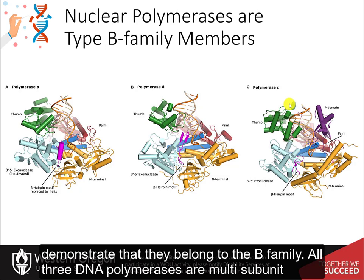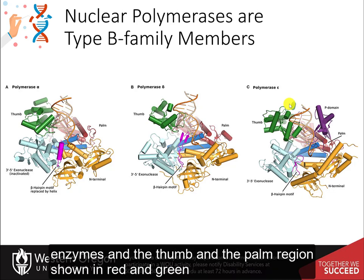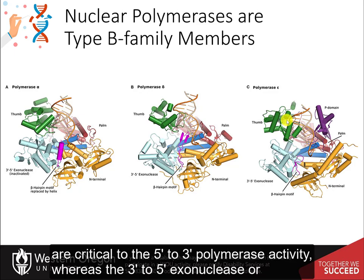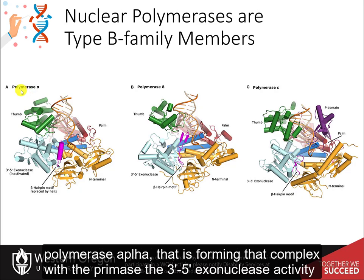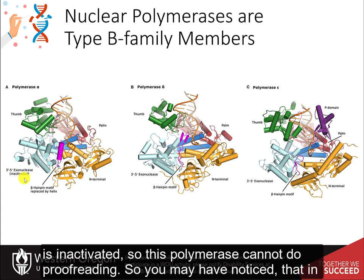All three DNA polymerases are multi-subunit enzymes. The thumb and palm regions, shown in red and green, are critical to the 5' to 3' polymerase activity, whereas the 3' to 5' exonuclease or proofreading activity is controlled by the region shown in cyan. Notice that in polymerase alpha, which forms a complex with the primase, the 3' to 5' exonuclease activity is inactivated — so this polymerase cannot do proofreading.